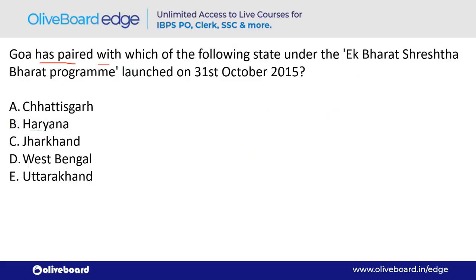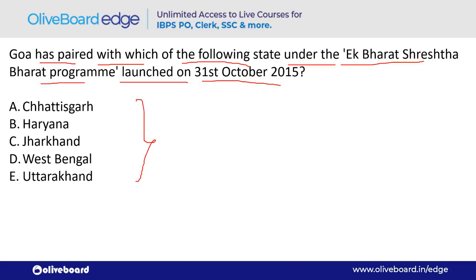Goa has been paired with which state under the Ek Bharat Shreshtha Bharat program launched on 31st October 2015? The answer is Jharkhand — option C.